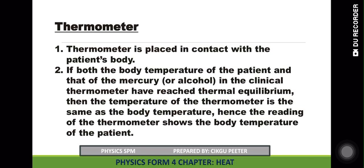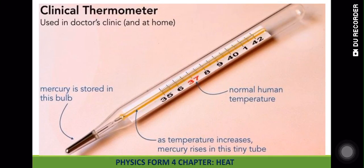A thermometer is placed under the tongue. The bulb of the thermometer, which contains mercury, absorbs heat energy and the liquid expands. Once it reaches thermal equilibrium, it records the body temperature. This is the idea of thermal equilibrium. This is an example of a clinical thermometer, which has a range of 35 to 42 degrees. It has a constriction to prevent backflow of mercury, and it is only used to measure human body temperature.